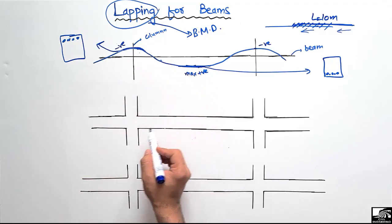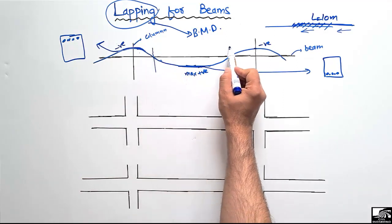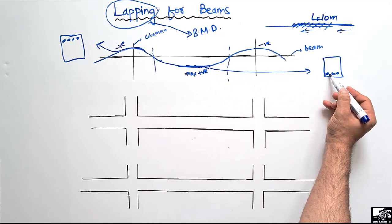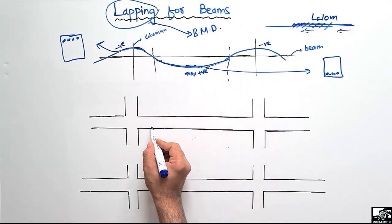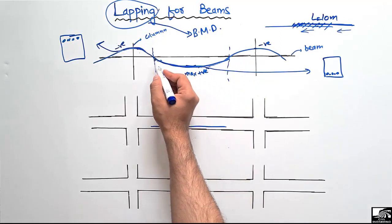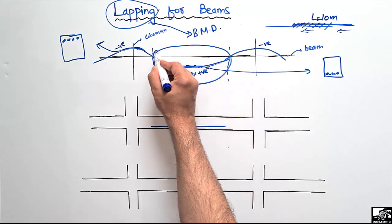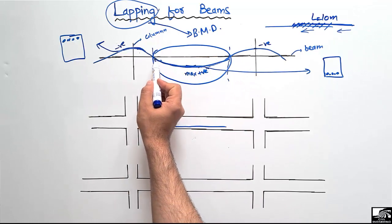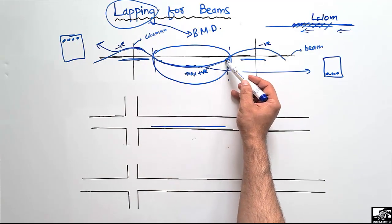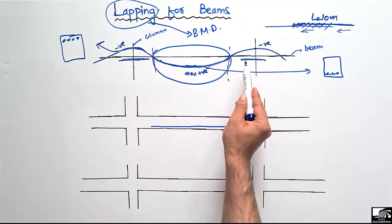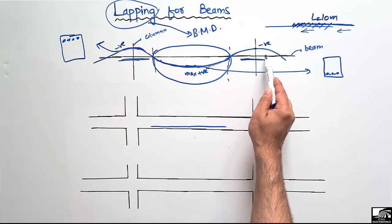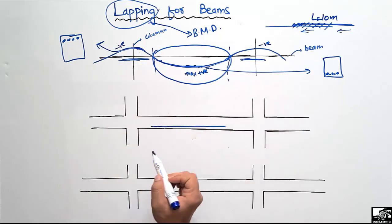The mid-span region is very critical because we have maximum positive bending moment there. When we provide reinforcement at the bottom section of the beam for this region, we should not overlap our steel bars at this section. As we can see, there is no positive bending moment at the regions near the supports, so we can provide lapping in those sections.